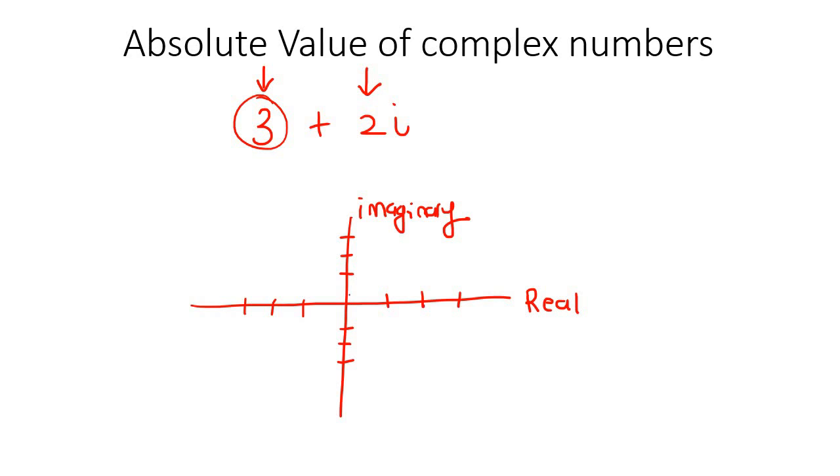So the real part is 3, so you'd go 3 to the right. The imaginary part is 2 up, and then you'd put a little dot there. So that's where it would be.